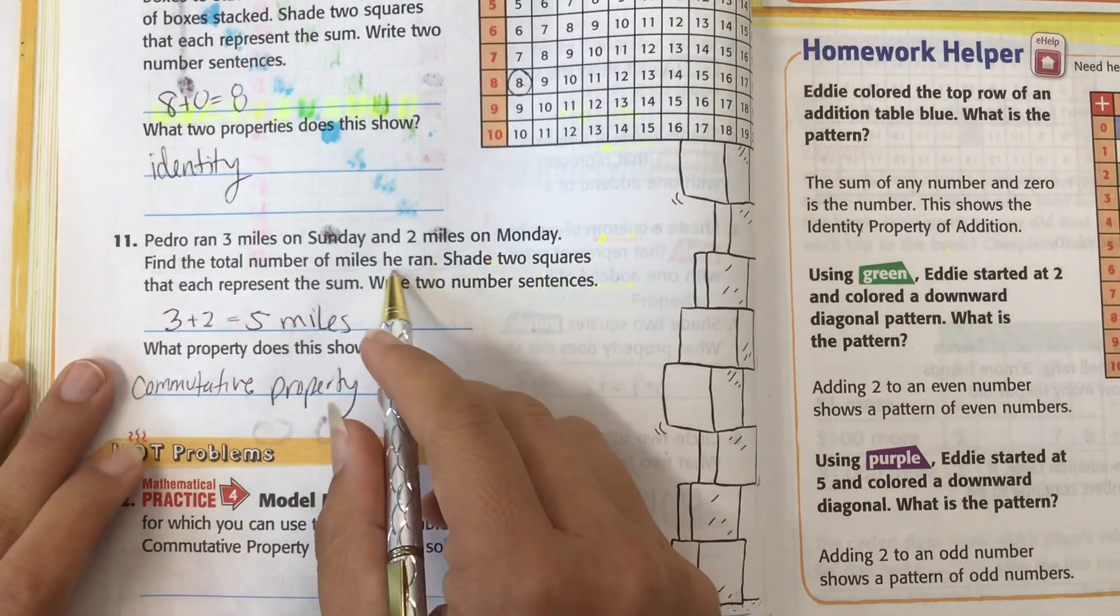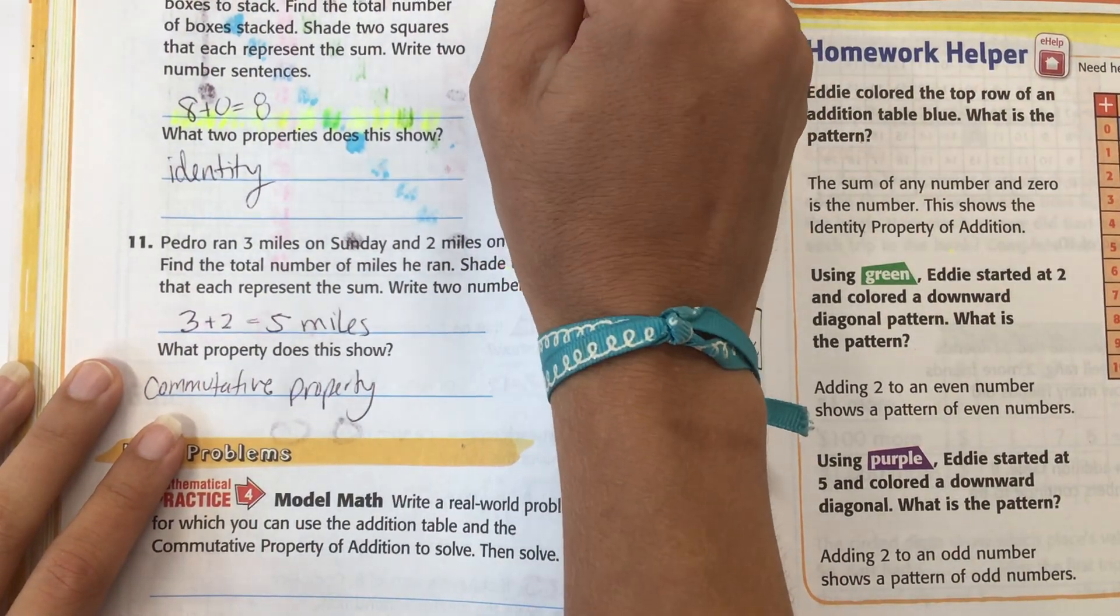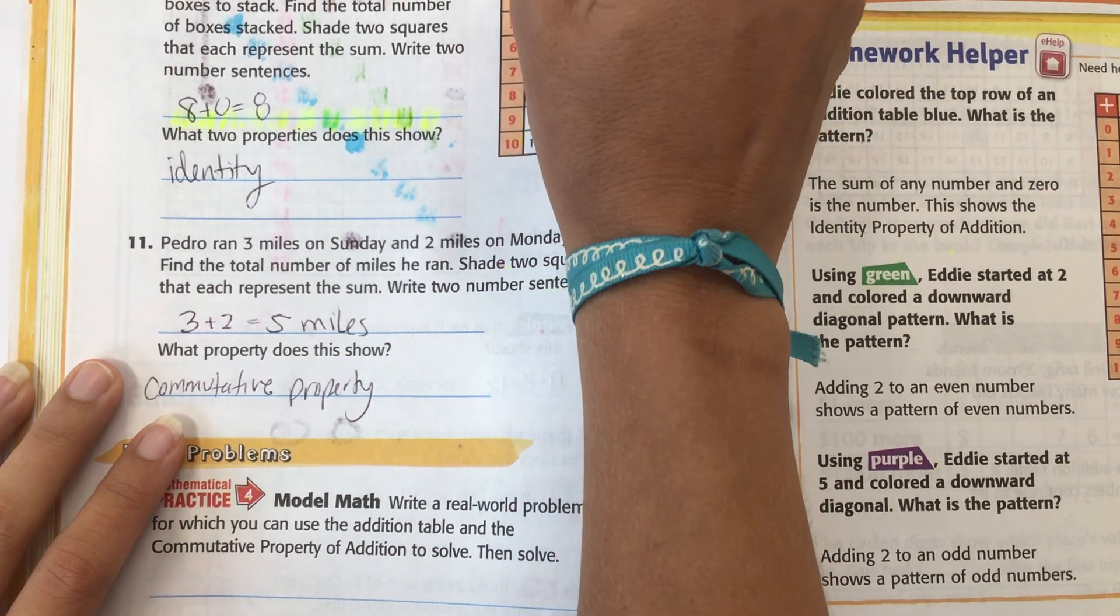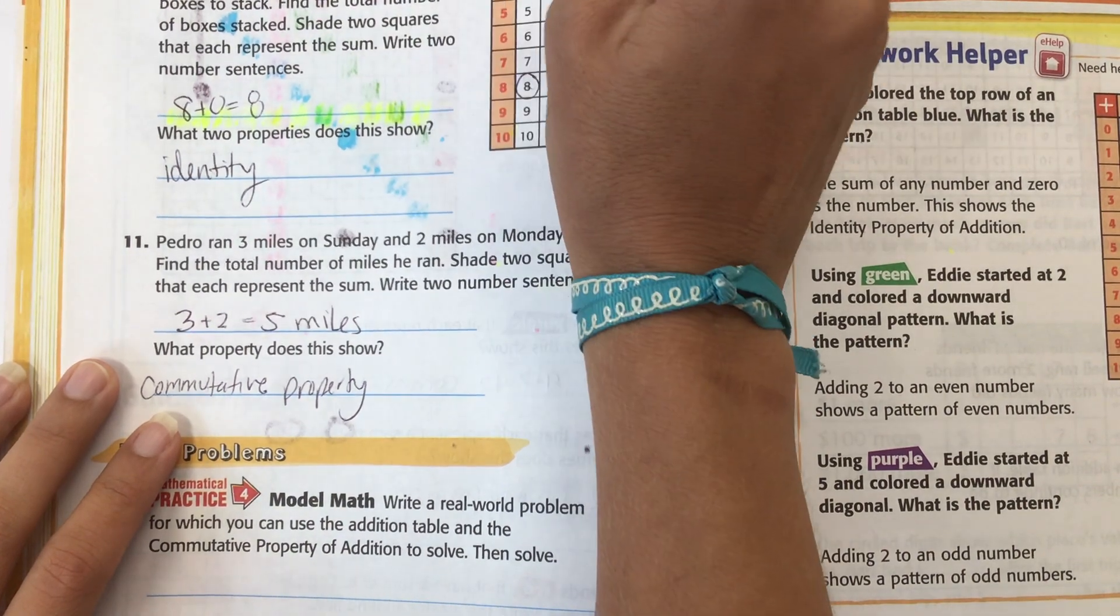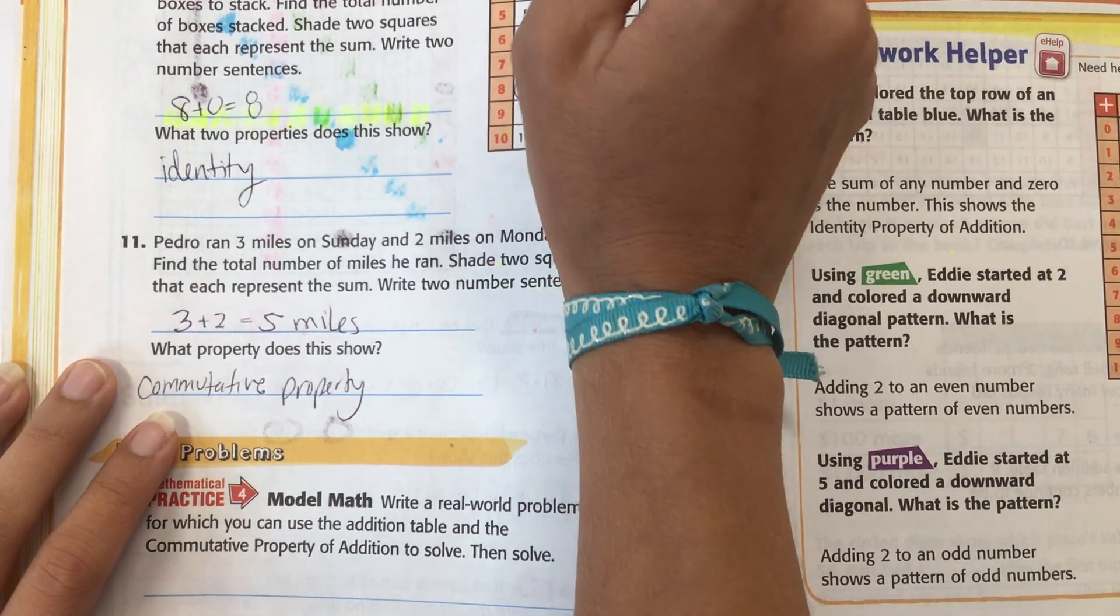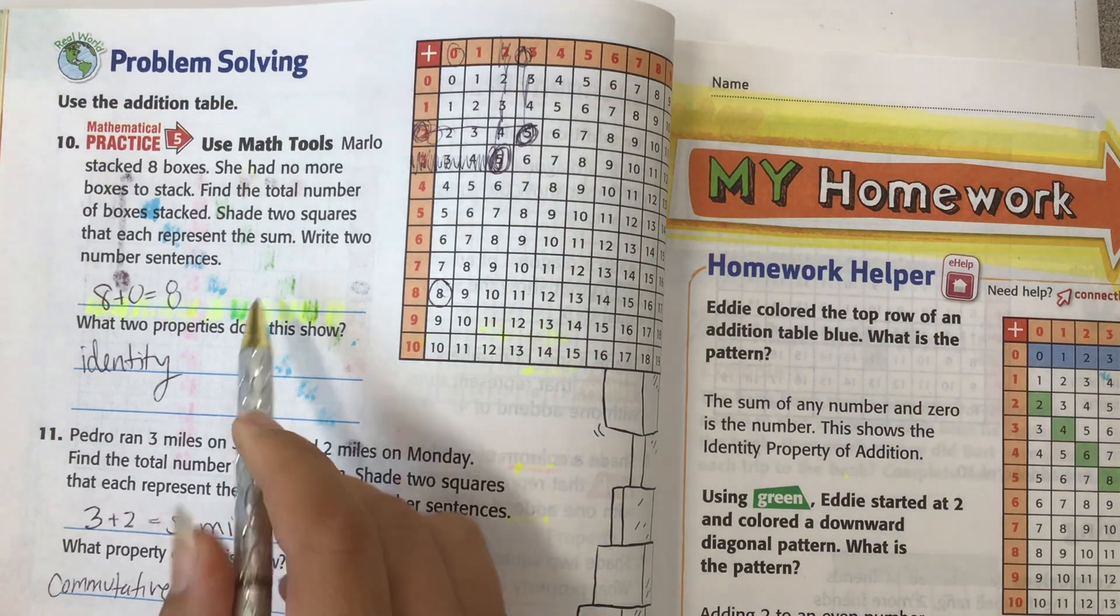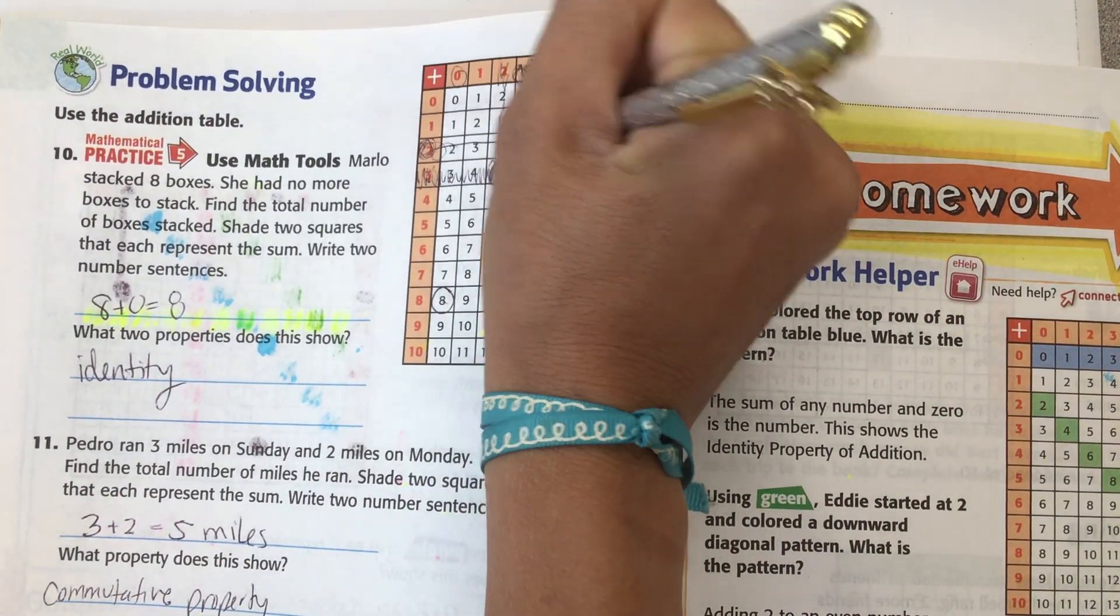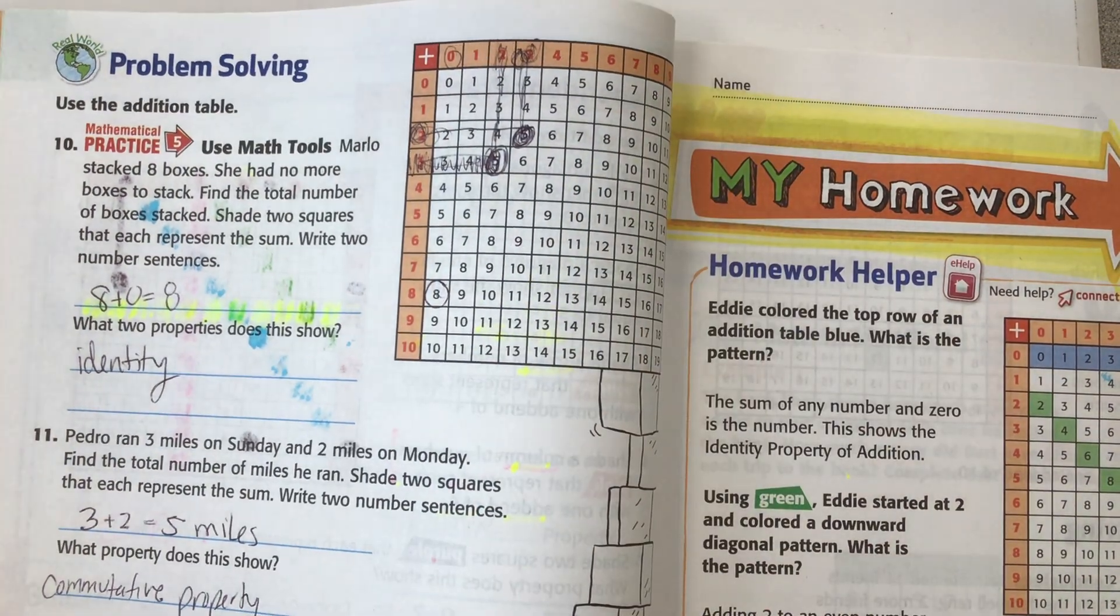And if he was to run three miles and two miles, it would be right here. And this would be the answer. Or he could do two miles and three miles. And we would shade this one right here. This one would match. It's still five. If you could see this one here, you can go two across to three. Three down. You get five. Two down to three. Still, you get five. That's the commutative property.